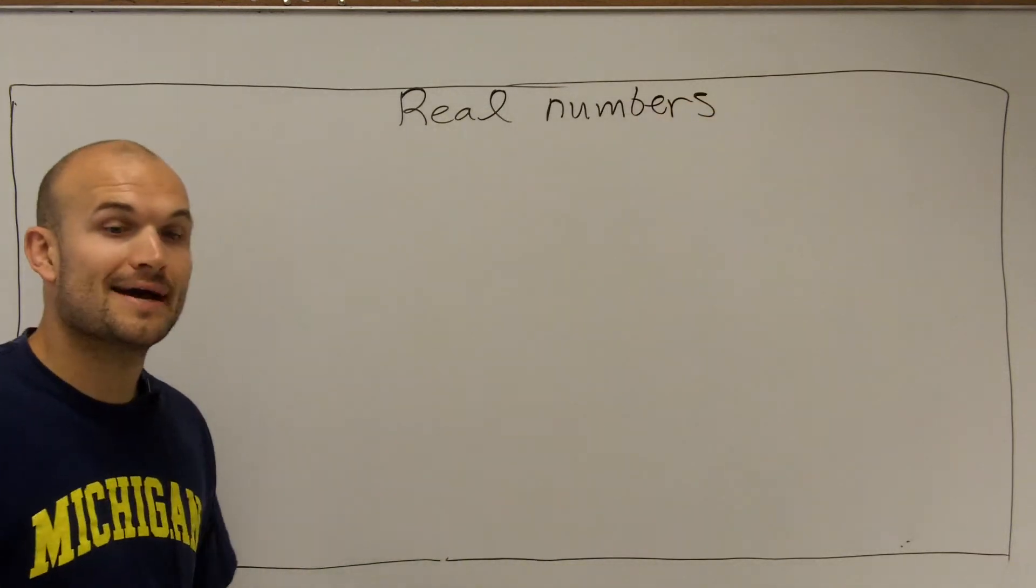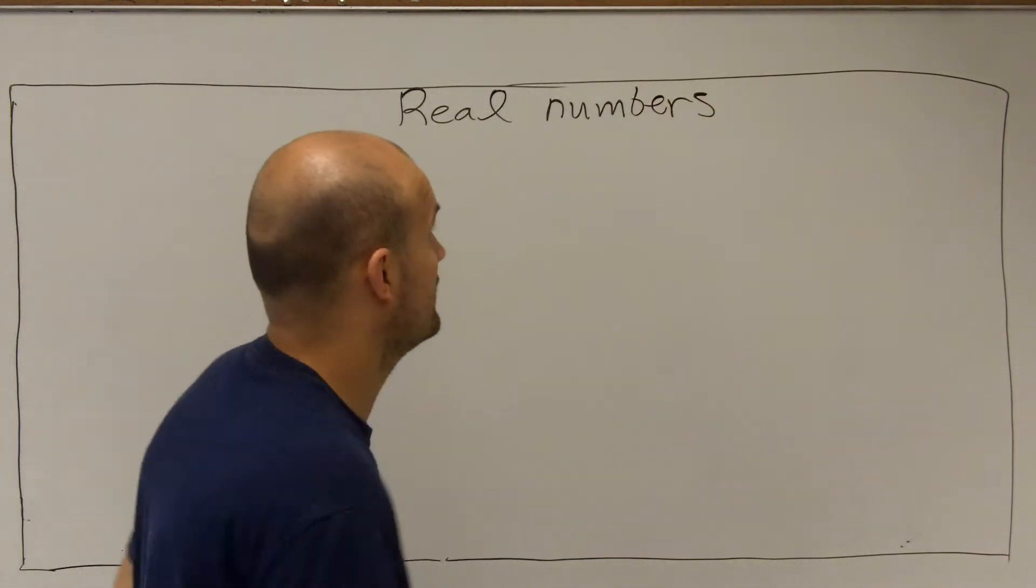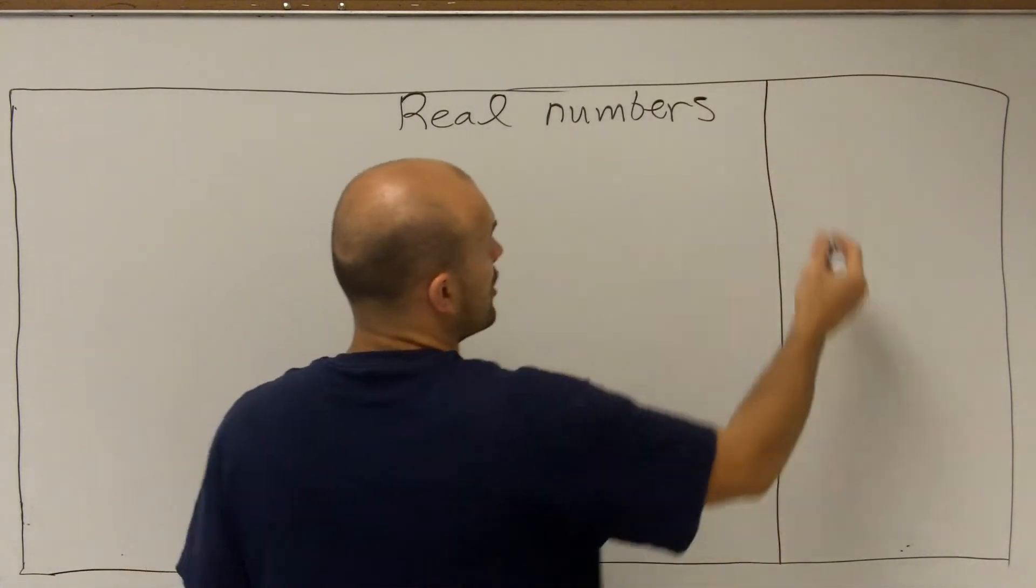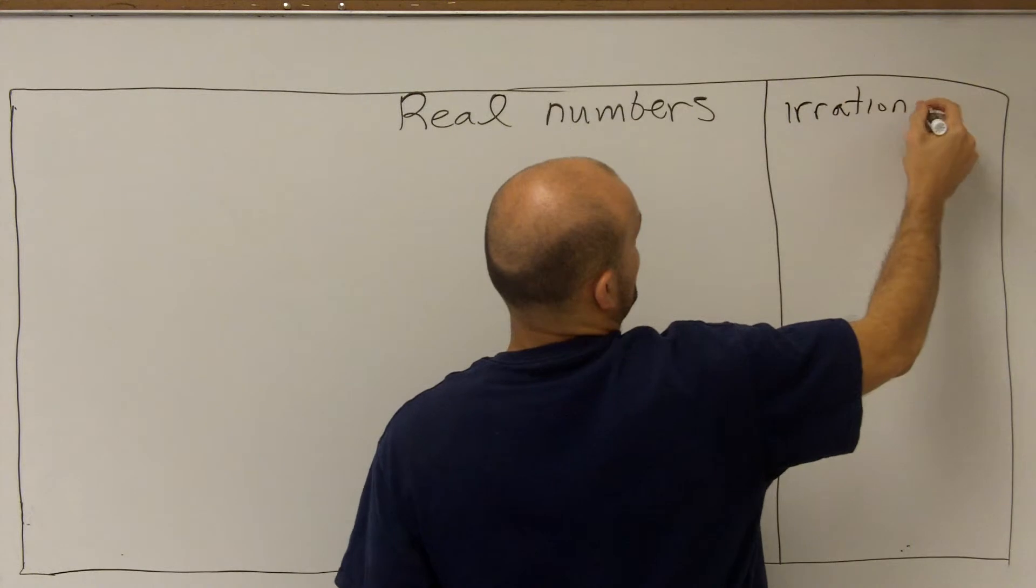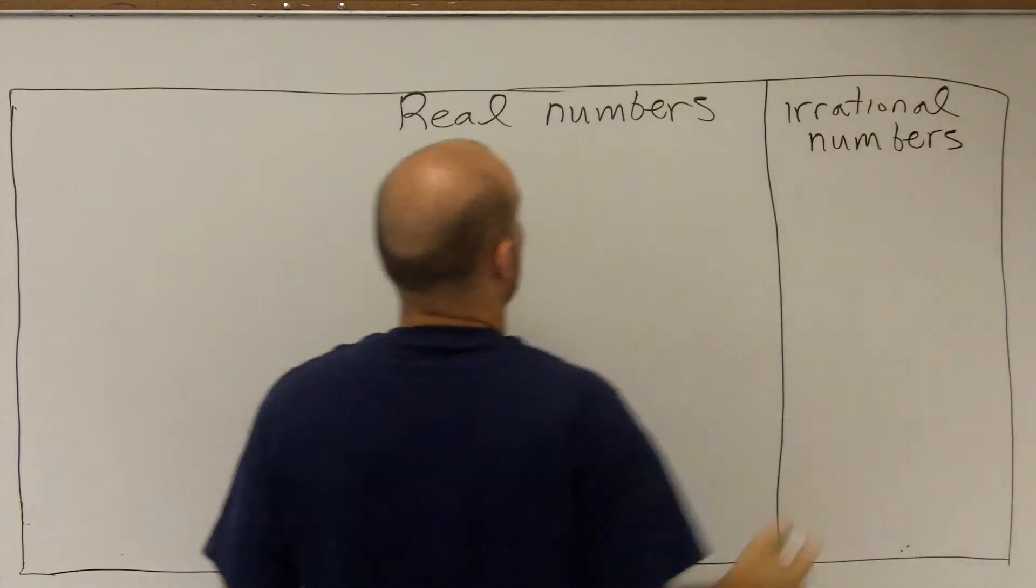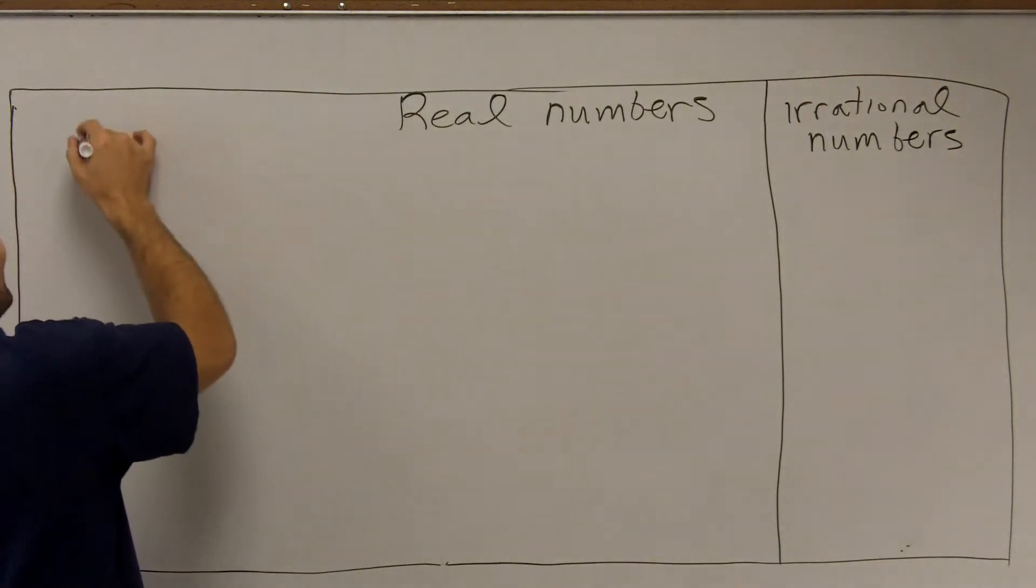Now there's two types of real numbers, and I'm going to represent them small here. We have irrational numbers, and we're going to have rational numbers.